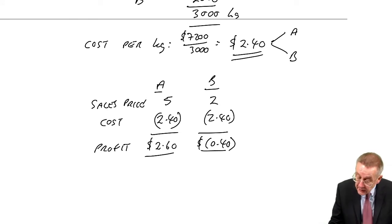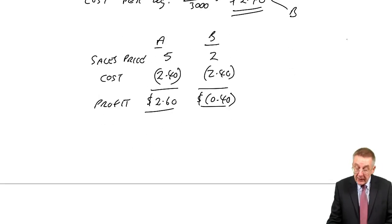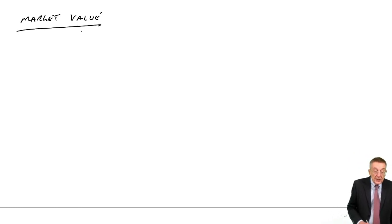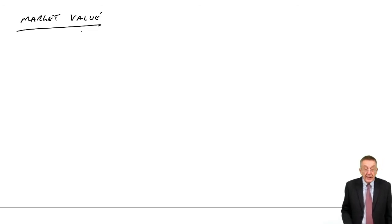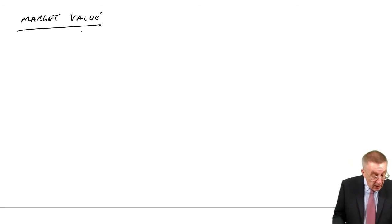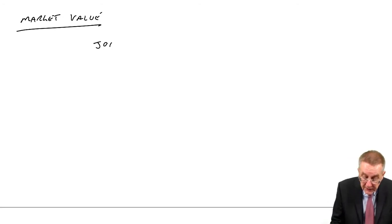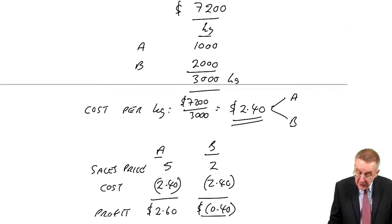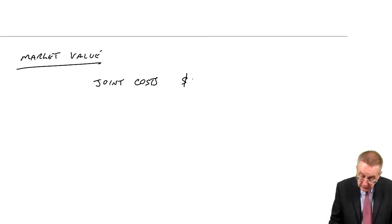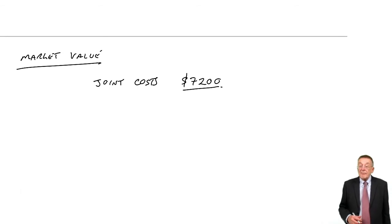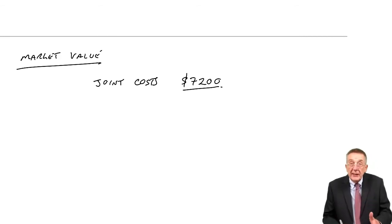It is going to look silly if every month one product is making a great big profit and the other's making a loss. So for that reason, the alternative way of doing it — we call it the market value basis. Example two is exactly the same example with identical figures, but we're going to get the cost per kilo using market value. The joint costs total is the same: $7,200 after subtracting the by-product money. But instead of dividing by the number of kilos, we're going to share those costs based on the value of what's produced.